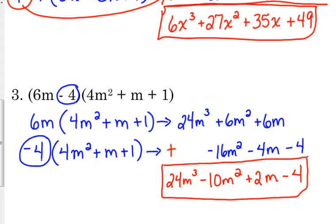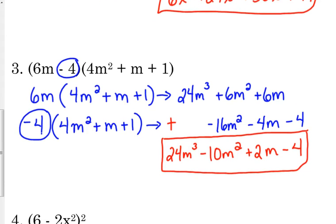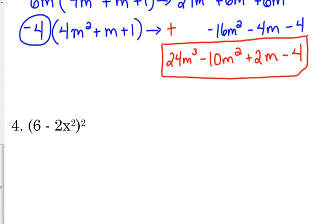Okay. Y'all look incredibly bored right now. So number 4. Okay, number 4. 6 minus 2x squared squared.